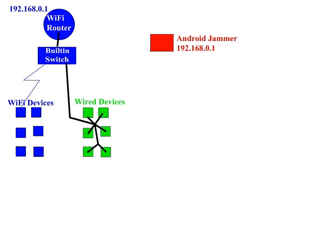By setting our Android device to use this same address, and because Android devices are notorious for spamming up the network with all their little communications, ARP will rank it higher than the router itself. Pretty much all traffic targeted at 0.1 — like internet traffic, for example — will get bounced to your phone, which will just harmlessly black hole it, and you won't see any effect to it.